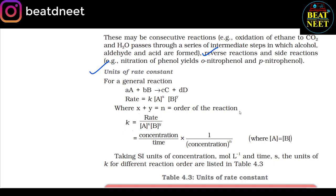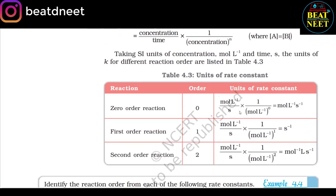Units of rate constant: for a general reaction aA + bB → cC + dD, rate = k[A]ˣ[B]ʸ where x + y = n (order of reaction). Therefore k = rate / ([A]ˣ[B]ʸ) = concentration / (time × concentration^n). Taking SI units of concentration as mol L⁻¹ and time as seconds, the units of k at different reaction orders are listed in Table 4.3: for zero order — mol L⁻¹ s⁻¹; first order — s⁻¹; second order — L mol⁻¹ s⁻¹.